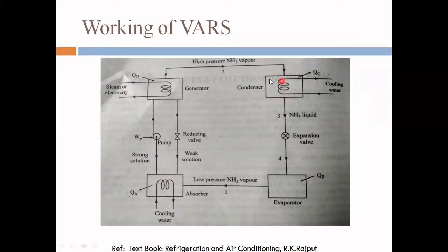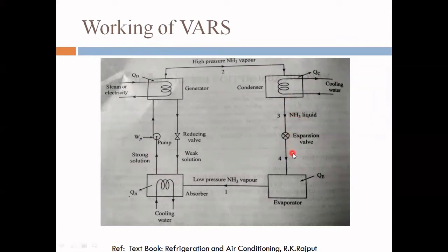The high-pressure NH3 vapor goes to the condenser, where cooling water is used to convert it into liquid NH3. Condensation takes place here. After the condenser, the high-pressure NH3 liquid passes through the expansion valve, which converts it into low-pressure, low-temperature NH3 liquid.